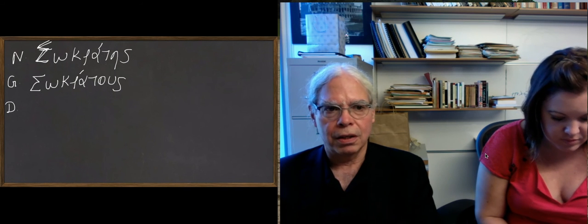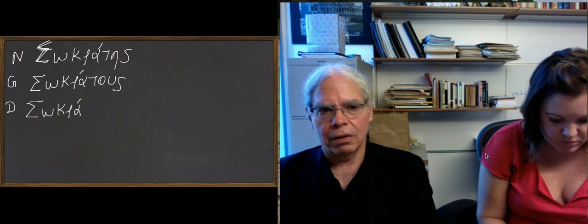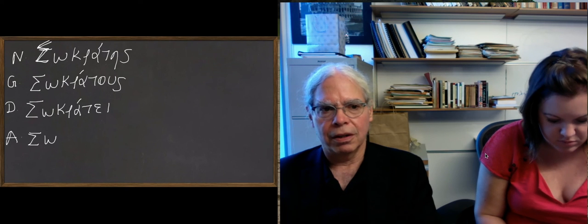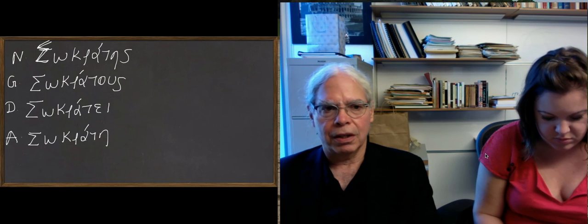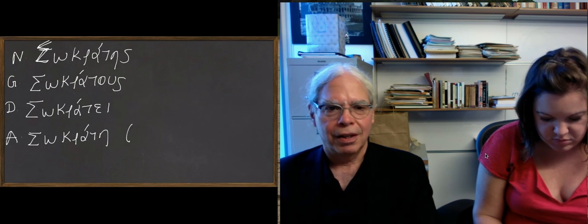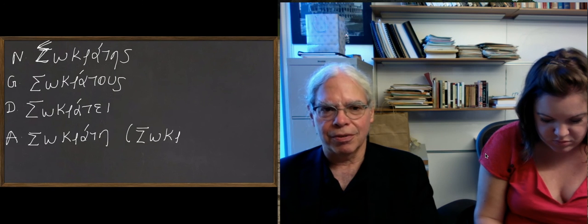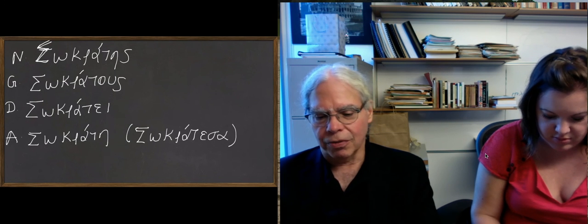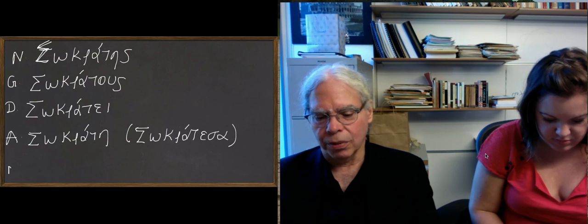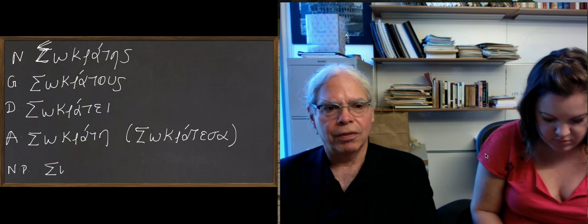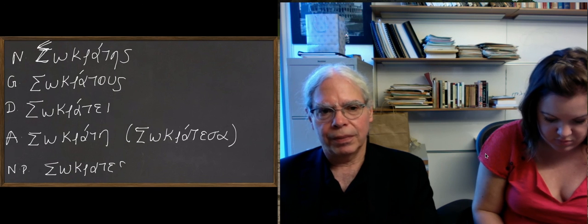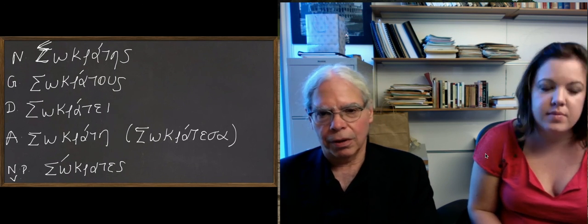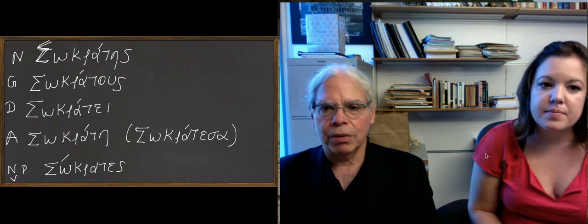The dative is Socratei with an E-I, and the accusative is Socrate with an eta from Socrates-a, the s disappearing and the epsilon and the alpha contracting into an eta. There's no plural for names, although we speak of several Demosthenes, the Greeks didn't do that. And there is a vocative Socrates, with the accent on the first syllable. Socrates is the weird vocative. So that's a very small subclass of s-stem type nouns. Again, our recommendation is that you memorize them as a separate group.